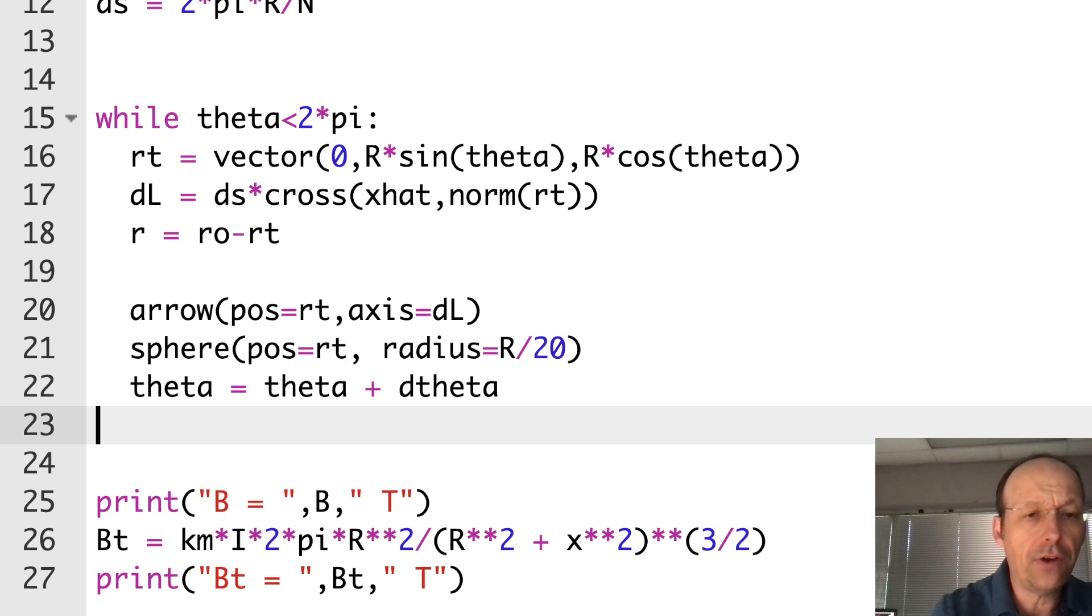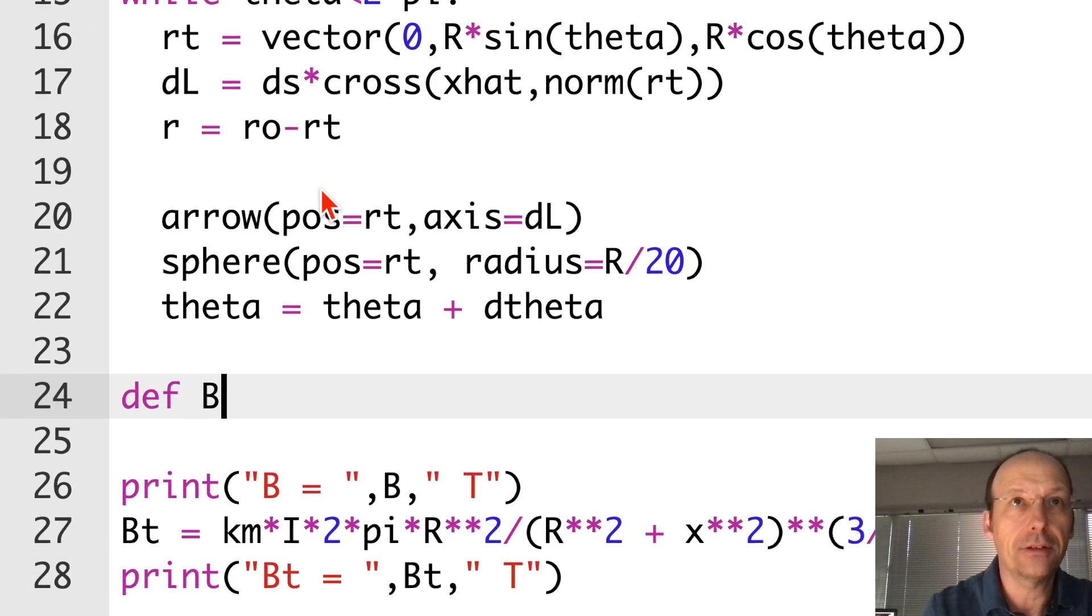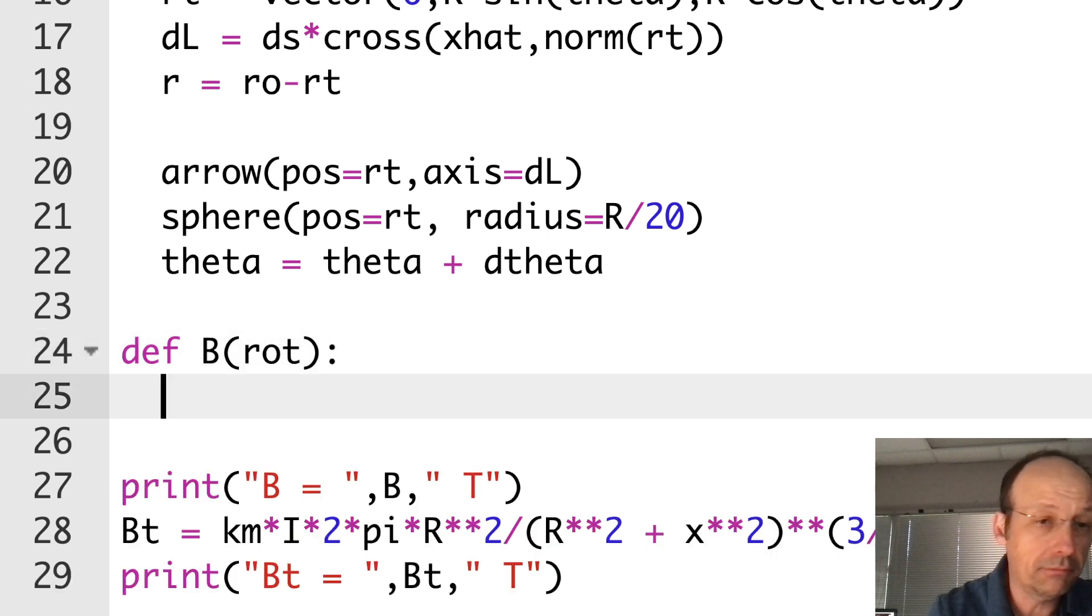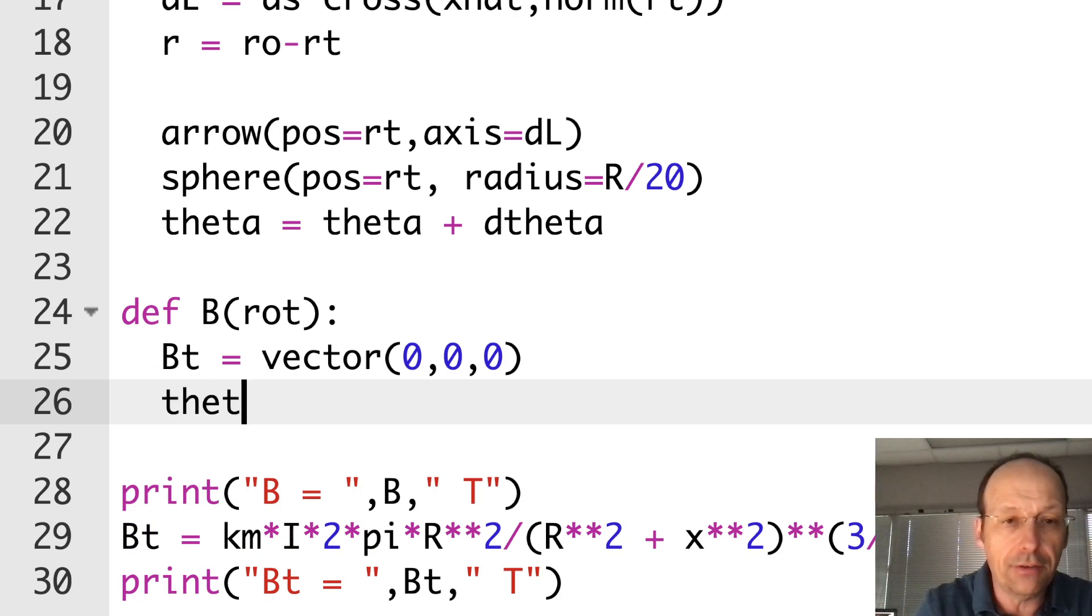Down here I'm going to define a function, def B, a little bit bigger so you can see it better. I'm going to pass to it the vector location where I want to find the magnetic field. I'm going to call that ROT. This is a weirder function because I'm using some of the global stuff. I'm using R and I and all that, so I'm not going to put that in the function. Just like before, I need to find a vector to add to so I can sum them up. So BT is the vector 0,0,0. When I go find each contribution to the magnetic field, I can add it to that and then return that. But I need to have something to start adding to. Now I'm going to redo the theta thing, so I need to reset theta equals 0.